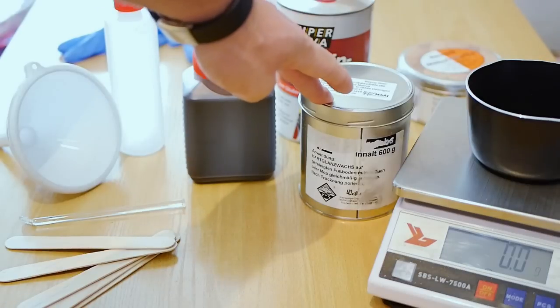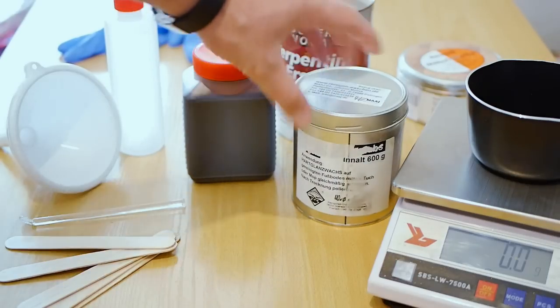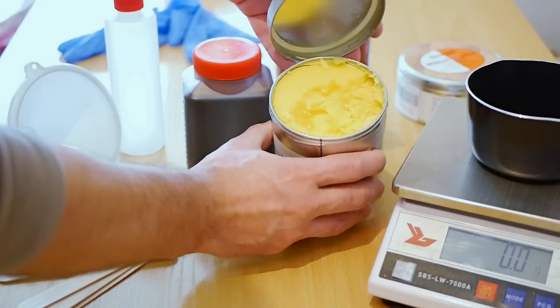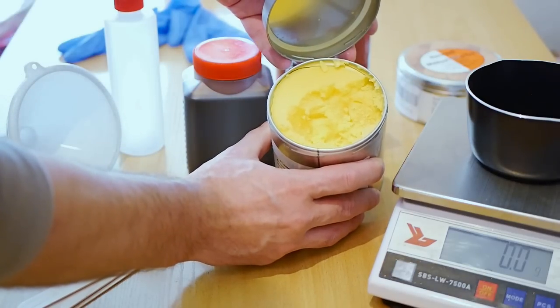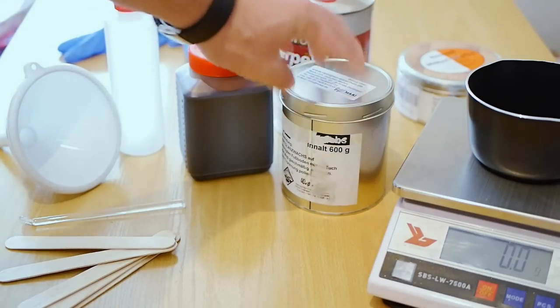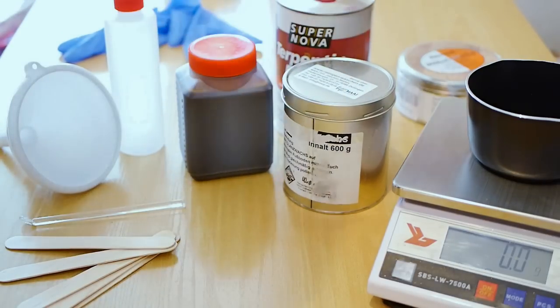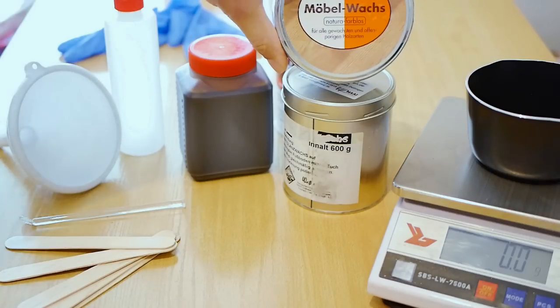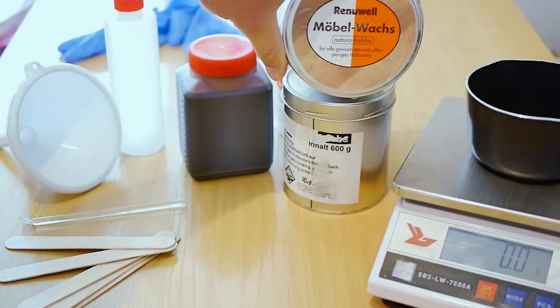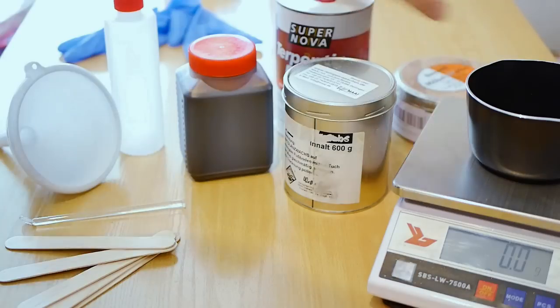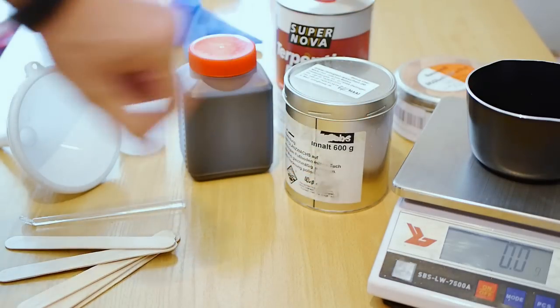Next we need a special floor wax and I've tested several and this one here works best. I'll put the link to the products in the video description. If you can't find this hard floor wax you can use a paste wax for furniture like this one from Renewal, but the hard floor wax works better. I think there is a higher amount of carnauba wax in it.